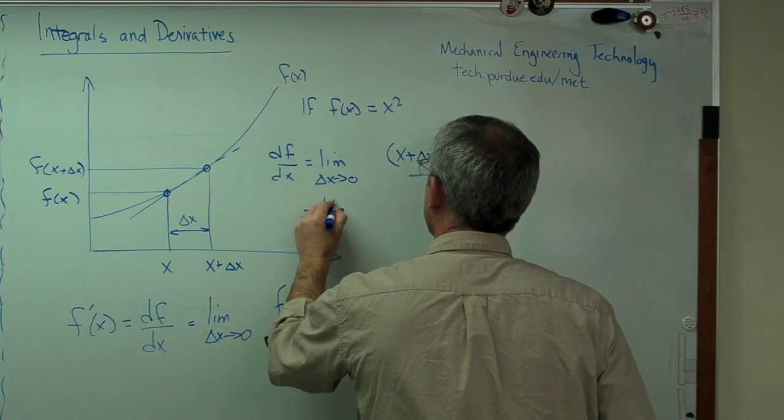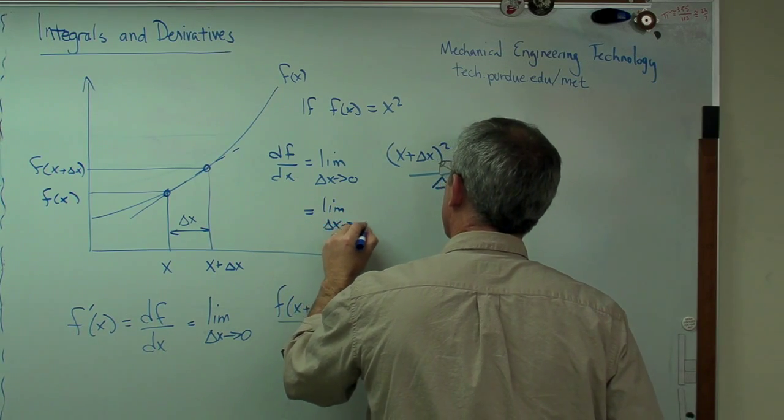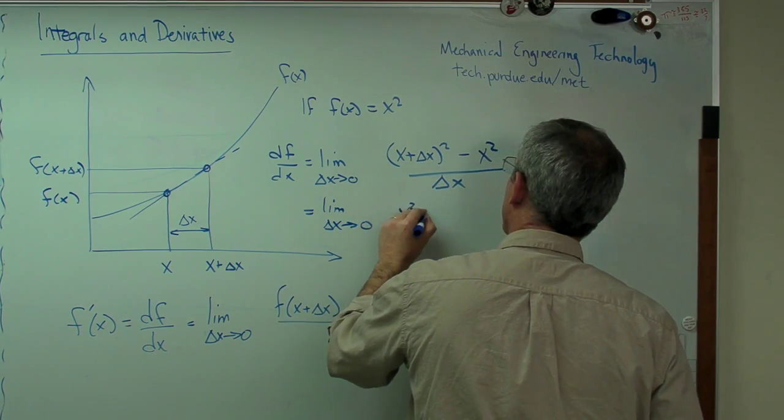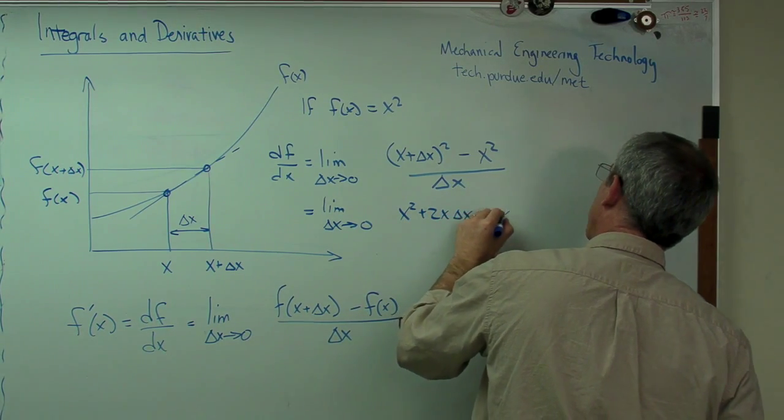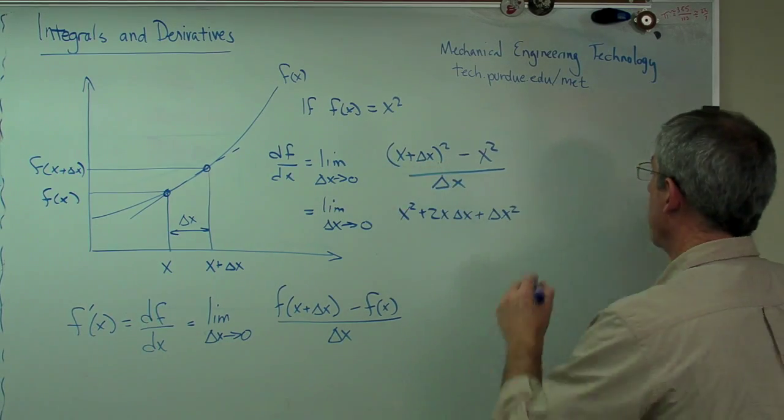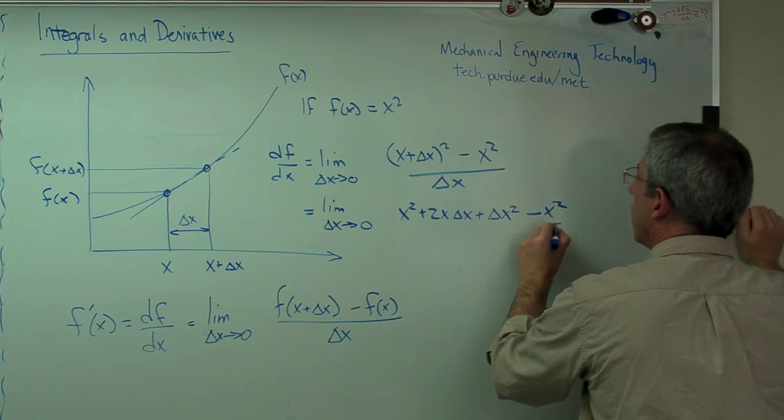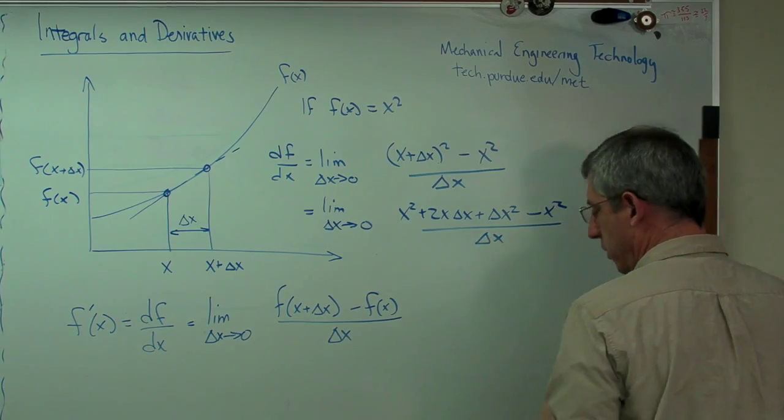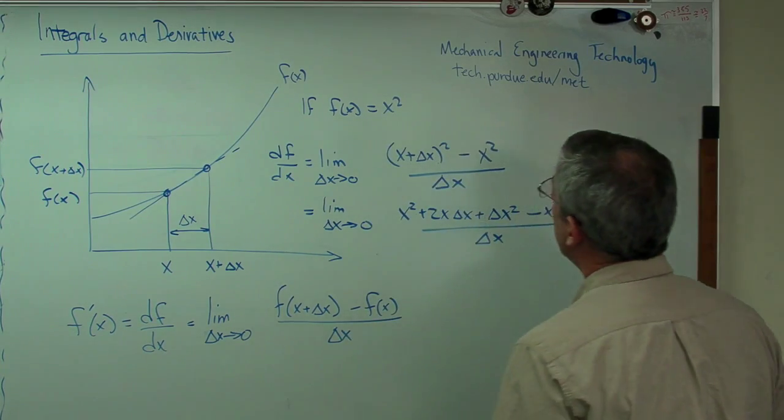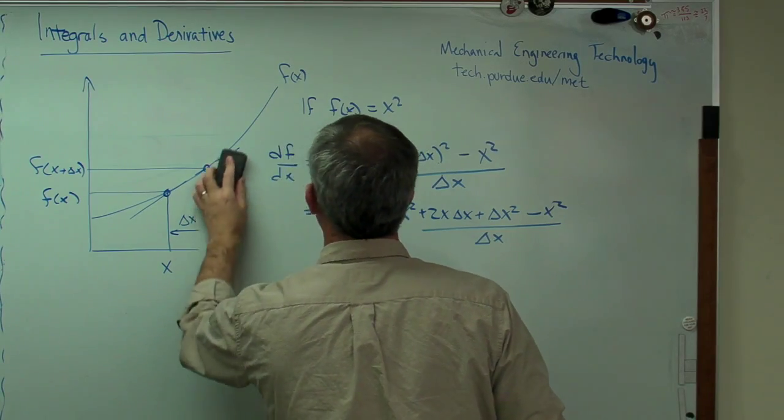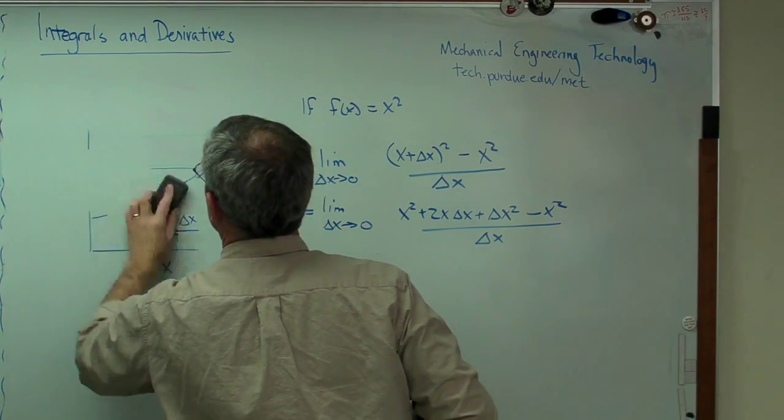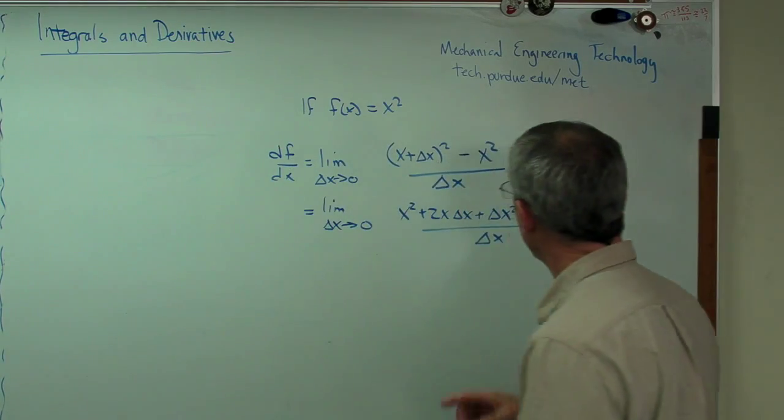Let's expand that out a little bit. Let's see. x squared plus 2x delta x plus delta x squared. That's that. Expand it out. Minus x squared over delta x. I'm going to run out of room on my little board here. Let's see. I'm going to erase some of this stuff. Let's get rid of all this. So that was derivatives. I'm going to do integrals here in a second.